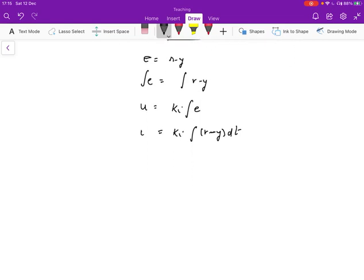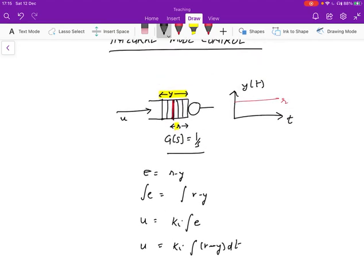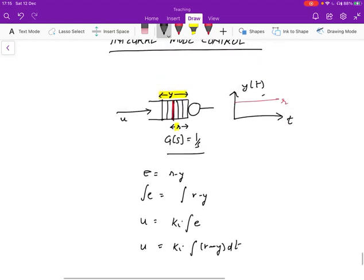This is the control law that says that the input U should be at any point KI integral of (R minus Y)dt. Intuitively, what's going on is that let's consider a point in time where Y is above R over here. Let's say Y is over here.